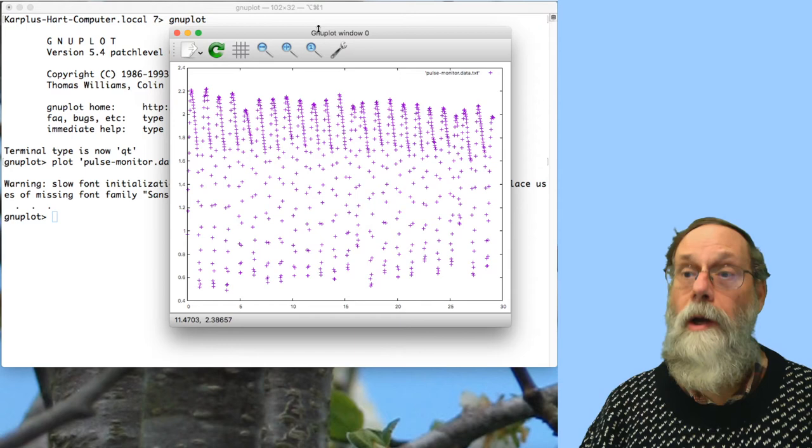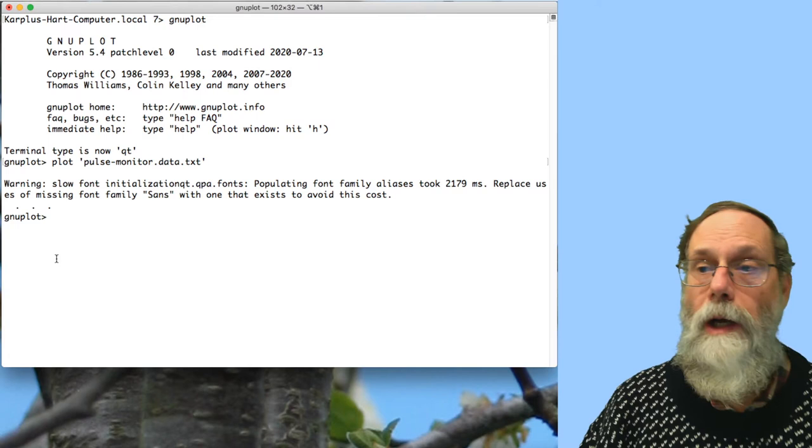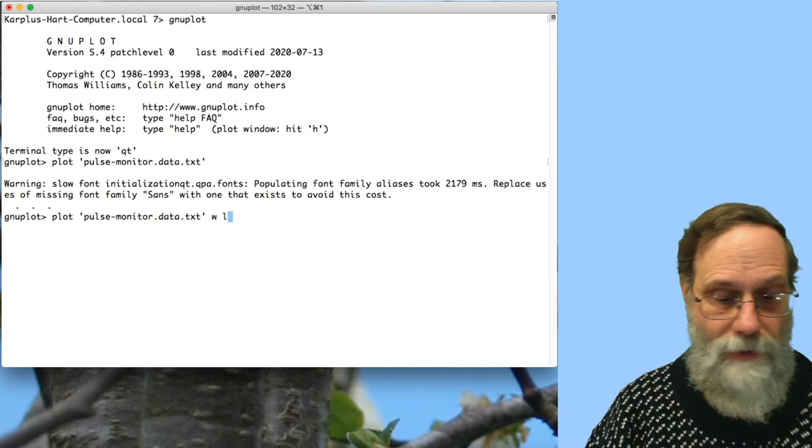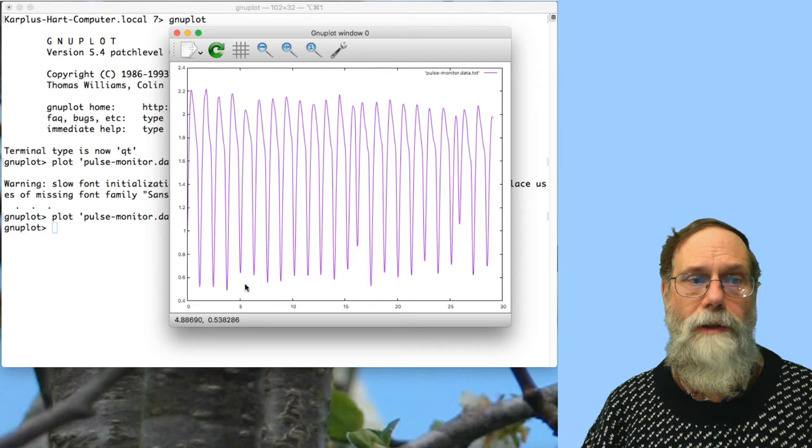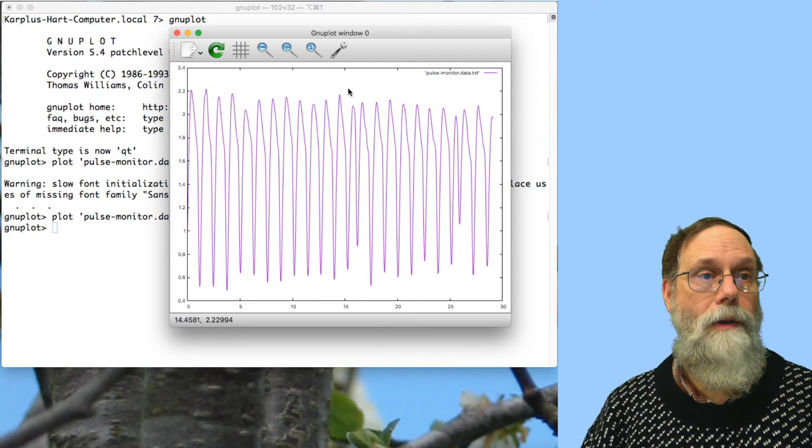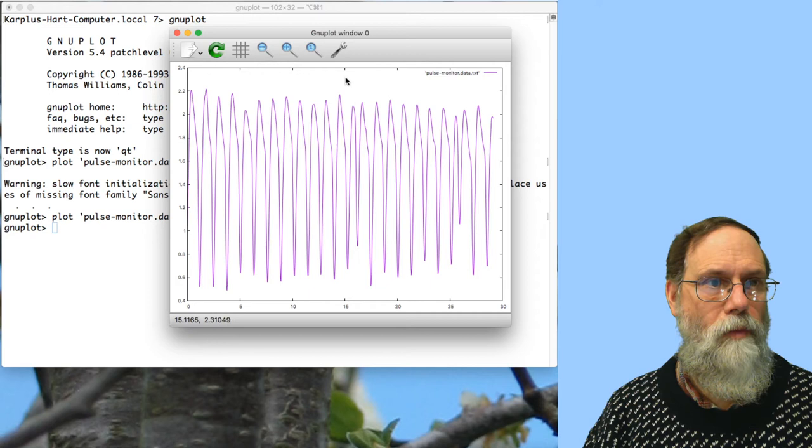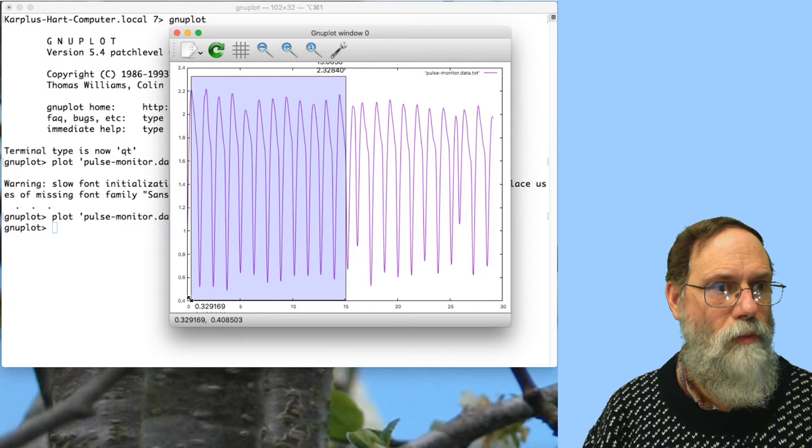We have a continuous curve here. We'd like to plot it as a continuous curve, and we can either do 'set style data lines' or we can just say 'with lines' here. Now we can see quite clearly what the pulse looked like. What I want to do is take a chunk of events here and count them. So let's zoom in just a little bit on this.